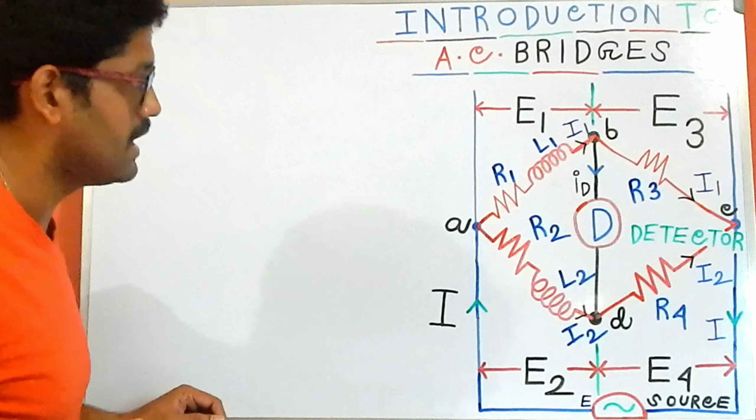If I equate the real term with the real term, I get R1·R4 = R2·R3. Our ultimate problem is to find the unknown value of R1, so by using this equation the unknown value of R1 is R2·R3 divided by R4. This is our R1 value — the unknown resistance value we are aiming to find.